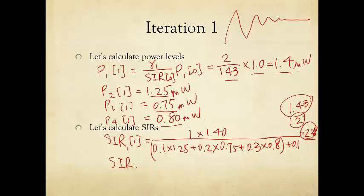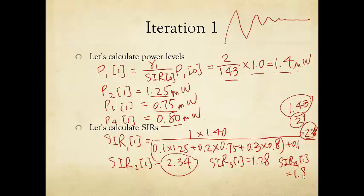Let's finish this calculation. The second user at iteration 1, the SIR is 2.34, which is bigger than the SIR at the last iteration which was 2, but not big enough yet, the target is 2.5. So expect that next round the power for the second transceiver pair will still go up. And the SIR 3 at this iteration is 1.28, SIR 4 at this iteration equals 1.82. Both of these are not quite their target SIR. So what you see after one iteration is that the first user actually overshot. The second user didn't overshoot. The third and fourth user actually now they're dipping below the target SIR now, and next round their power should increase.